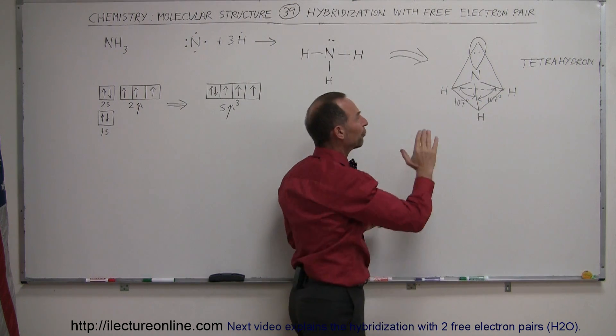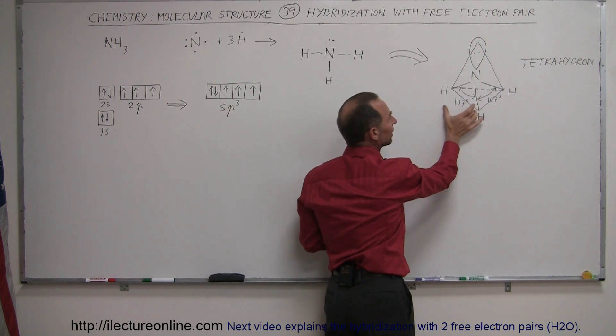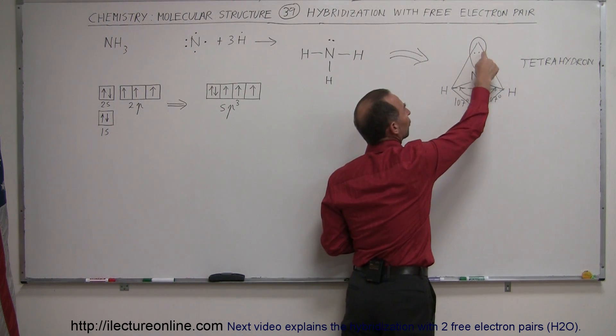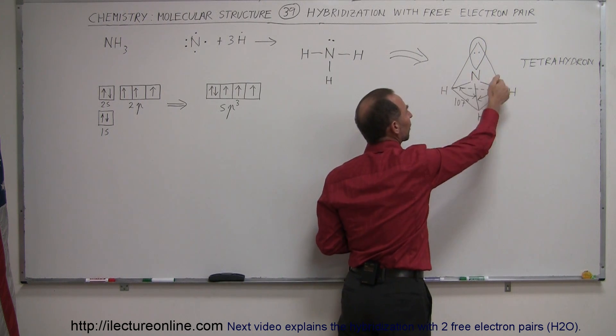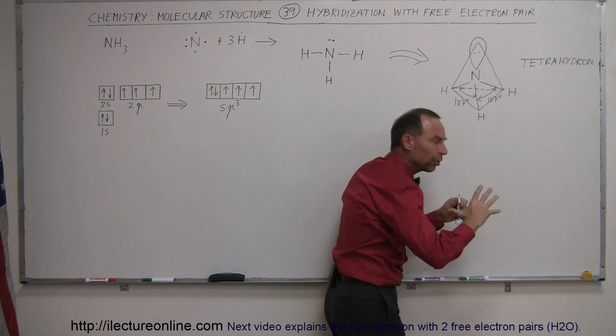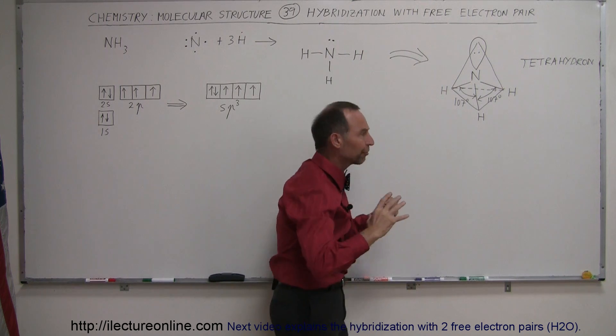Notice that if there were four hydrogens, the bond angles would be 109.5 degrees, but there's a lot more repulsive forces between the free electron pair here and the bond electrons between the nitrogen and hydrogen, which pushes the hydrogen a little bit further down.